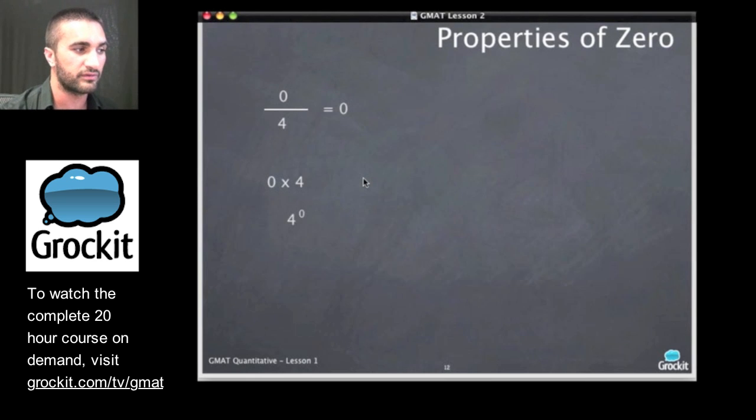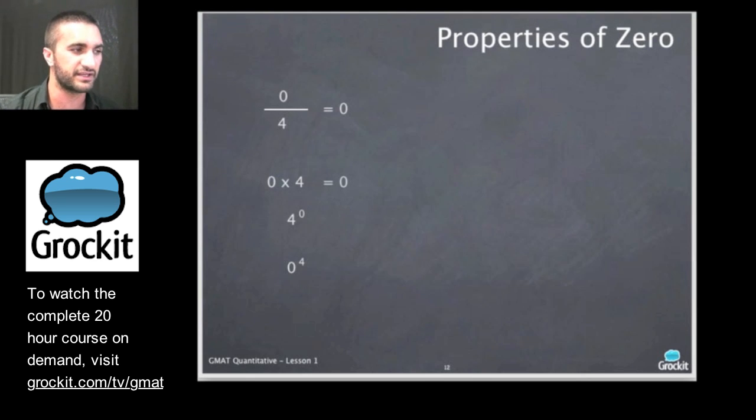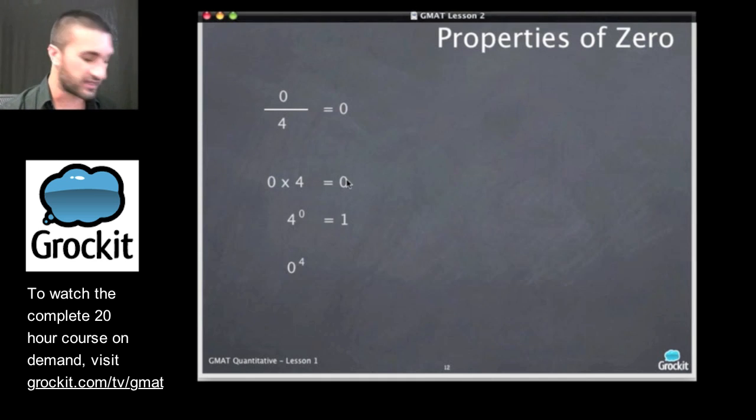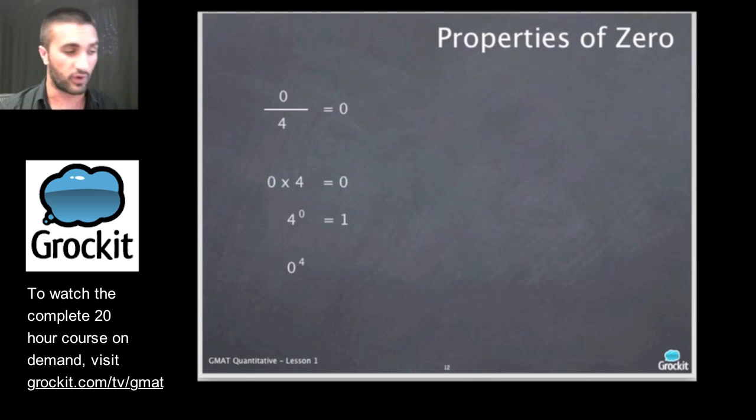It gets a little bit more complicated when we have to remember it the other way. So zero times four, four to the zero, and zero to the four. What are the rules here? If I multiply anything by zero, I should get zero. What happens when I raise something to the zero power? It always becomes one. It always, always becomes one. When you raise some number to the zero power, the answer is one.